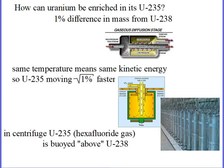Then put it into the next centrifuge, and the next. It is a very difficult process to enrich uranium, and that is why uranium fuel was so expensive. This image was actually taken of a plant in Iran, and this is our concern — that maybe they are not just enriching the fuel to make fuel for their nuclear power plants, but enriching it so much that they are trying to make a nuclear weapon. People argue about that.